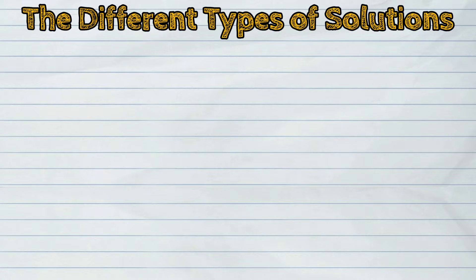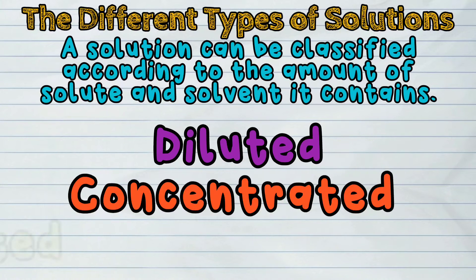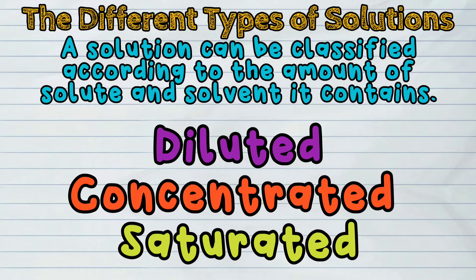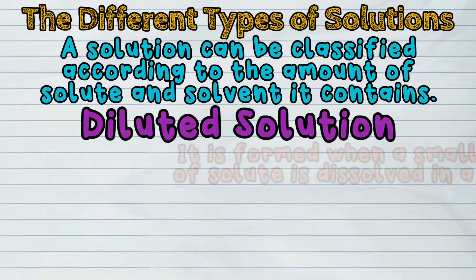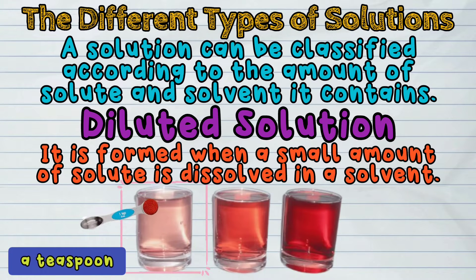Let us now discuss the different types of solutions. A solution can be classified according to the amount of solute and solvent it contains. It can be diluted, concentrated, or saturated. A diluted solution is formed when a small amount of solute is dissolved in a solvent. A teaspoon of powdered juice dissolved in a glass of water is an example of a diluted solution.